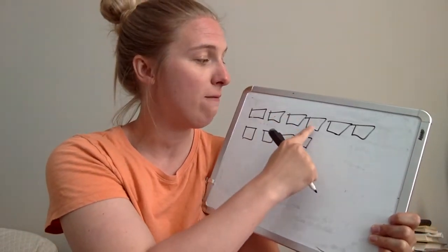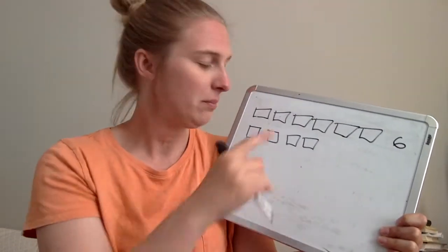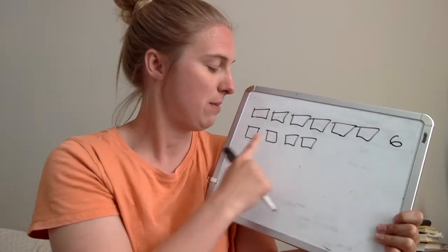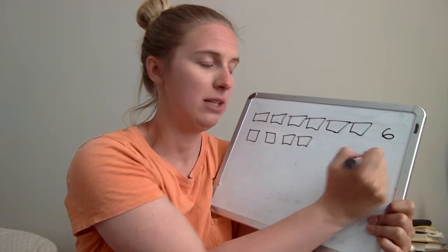One, two, three, four, five, six. I'm going to write that down. How many are on the bottom row? Can you count that with me? One, two, three, four. I'm going to write that down.